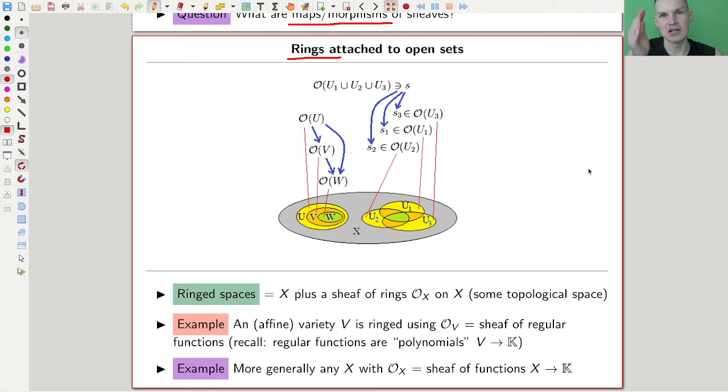Again, algebraic geometry likes rings, that's why it's a sheaf of rings, instead of a sheaf of vector spaces, or a sheaf of whatever, sets, or a sheaf of whatever. It's really a sheaf of rings, with algebra, some algebraic structure.